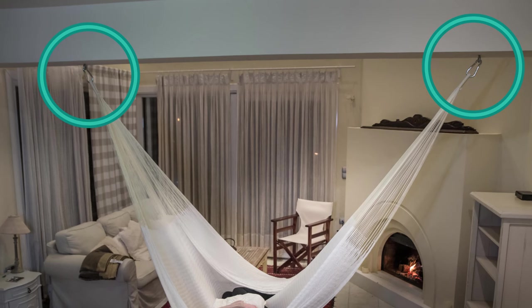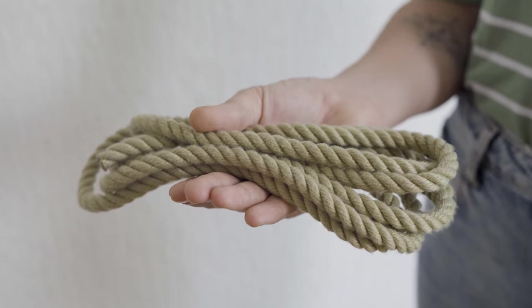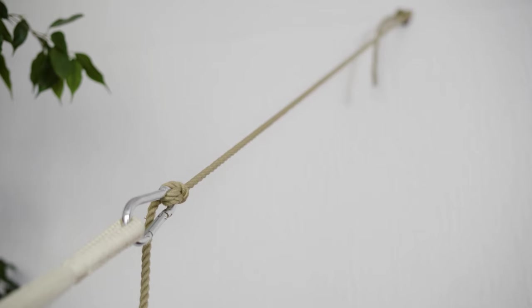If the ring bolts are positioned at the correct height, as shown in the picture, you can directly attach the hammock using two carabiners. In most cases, however, we recommend fixing the hammock with suspension ropes. This allows the hammock to be suspended flexibly, and the ropes also act as shock absorbers, making lying in the hammock even more comfortable.